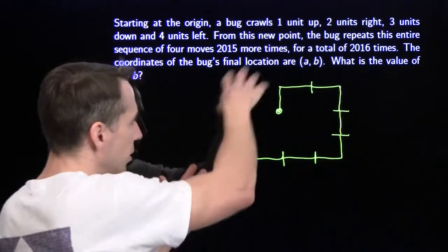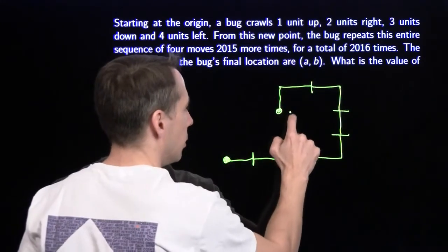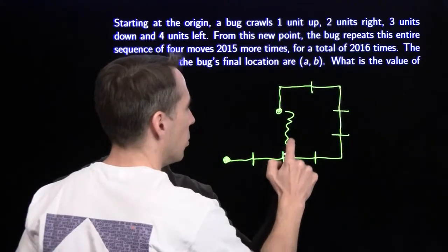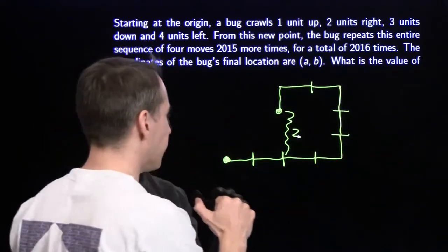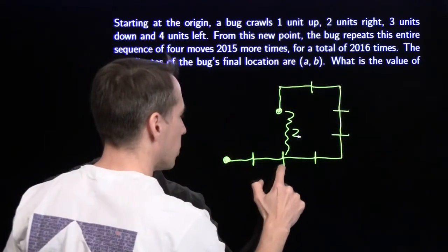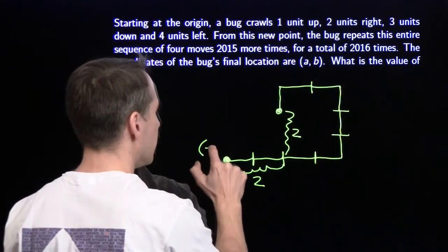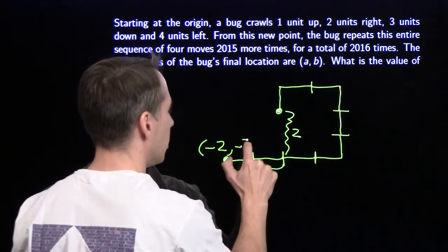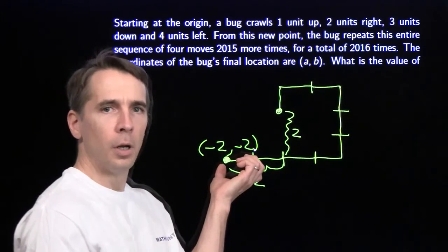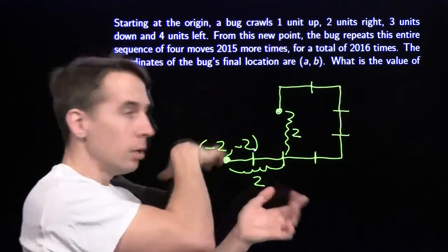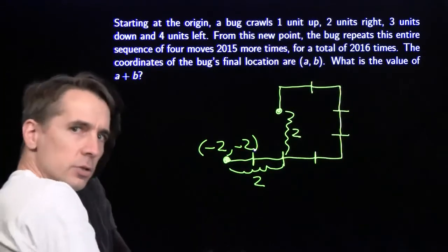In one circuit: up 1, down 3 — net down 2. Right 2, left 4 — net left 2. So at the end of one circuit, the bug is at (−2, −2). Each subsequent circuit also moves the bug down 2 and left 2.